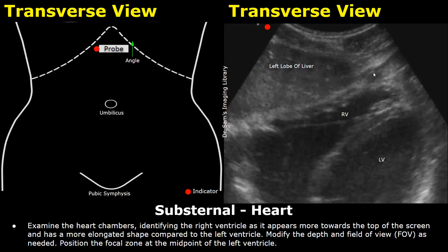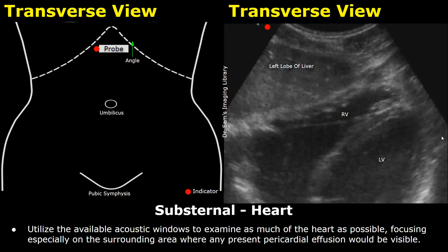Modify the depth and field of view as needed, and position the focal zone at the midpoint of the left ventricle. The region around the heart is the area of interest during a FAST scan. We need to look for anechoic fluid within the pericardial space. The pericardium is visible here, and fluid will accumulate within the pericardial space in case of pericardial effusion.